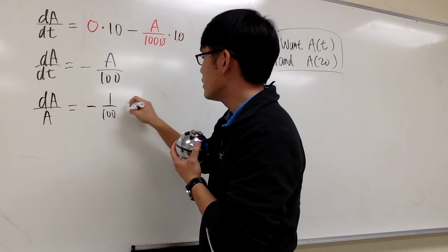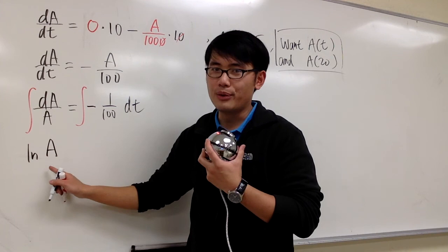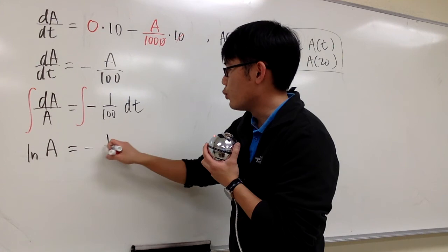And we can integrate both sides now, integrate here and here. On the left-hand side, we will just have ln of A, and notice that I didn't put absolute value, because we know A is the amount of salt, it's always positive, right? So we can just ignore the absolute value, we know it's ln of A. And on the right-hand side, this is just going to be negative 1 over 100 T, and let me introduce the first constant, so plus C1.